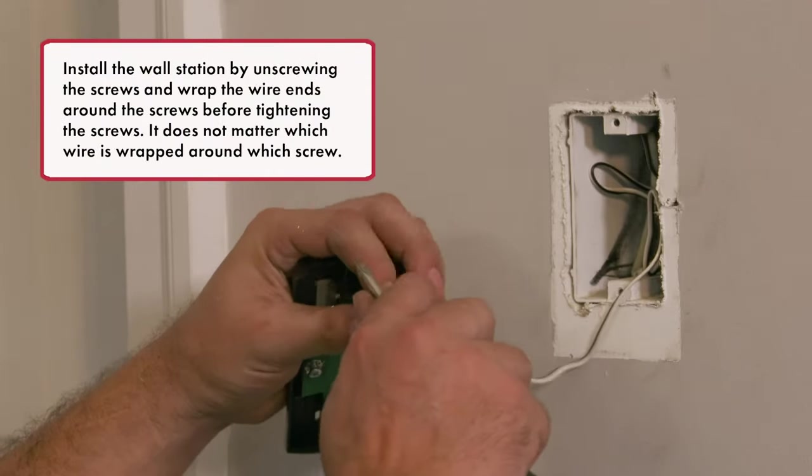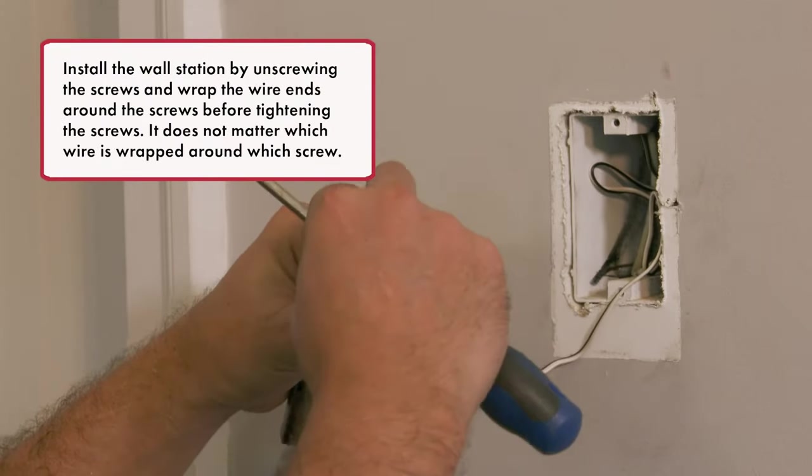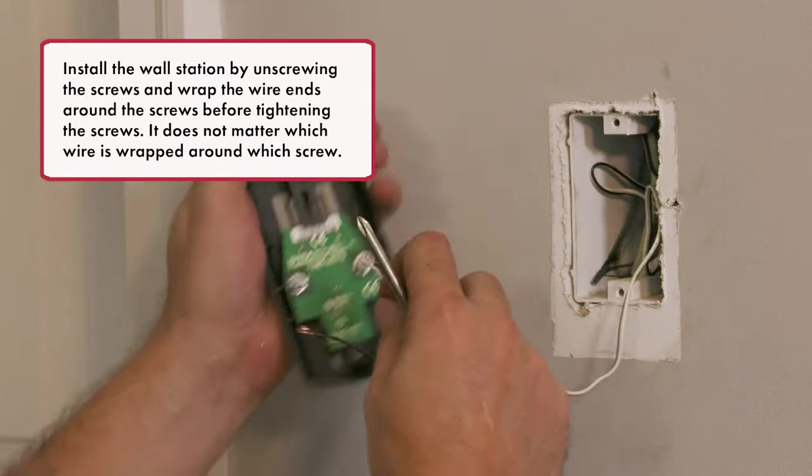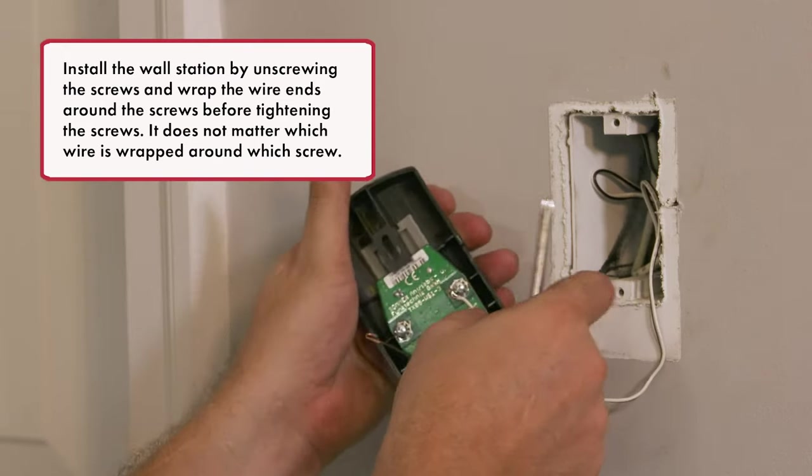Install the wall station by unscrewing the screws and wrap the wire ends around the screws before tightening the screws. It does not matter which wire is wrapped around which screw.